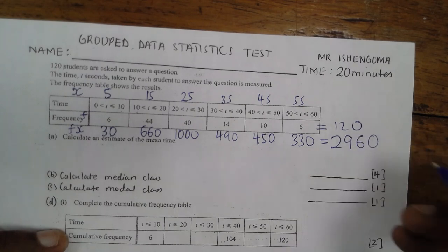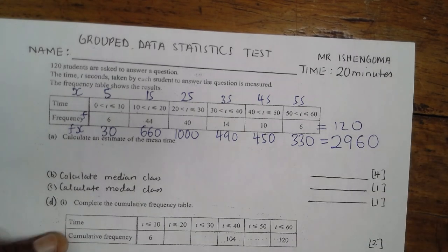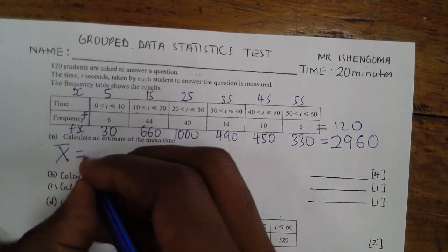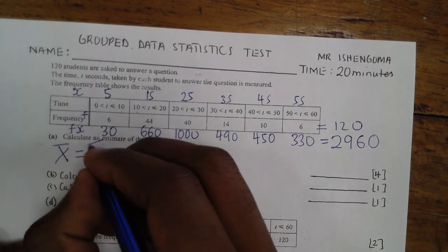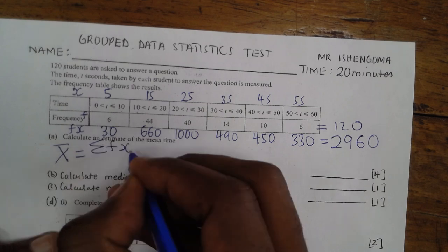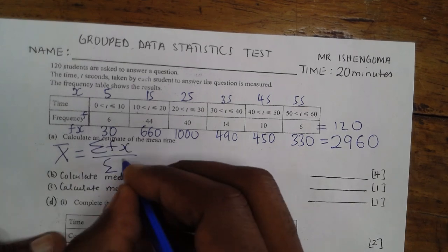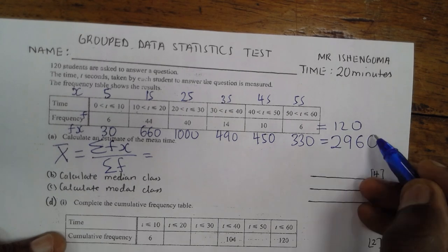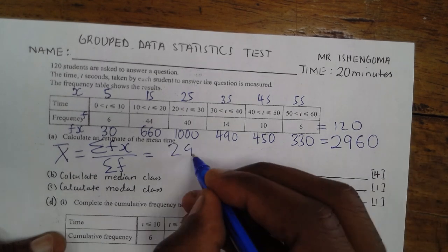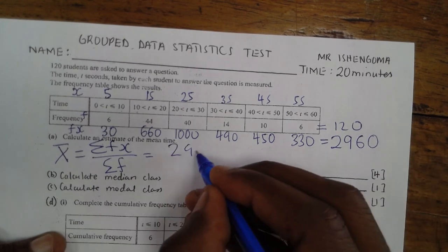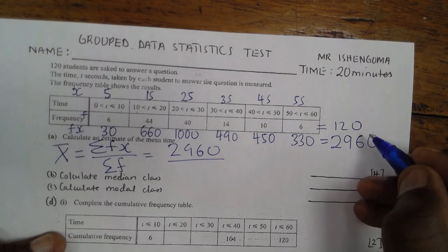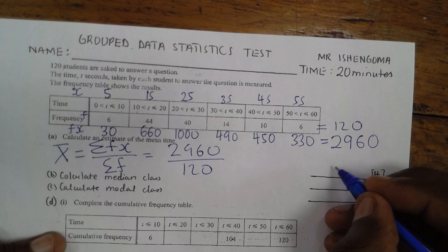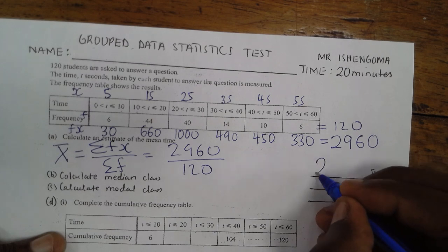We know the mean is obtained by the summation of fx divided by the summation of f. Our summation of fx we have already calculated — that is 2960 — divided by the summation of f, which is 120. When I divide, I get 24.7.